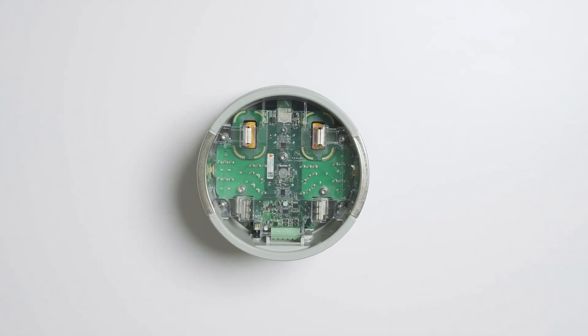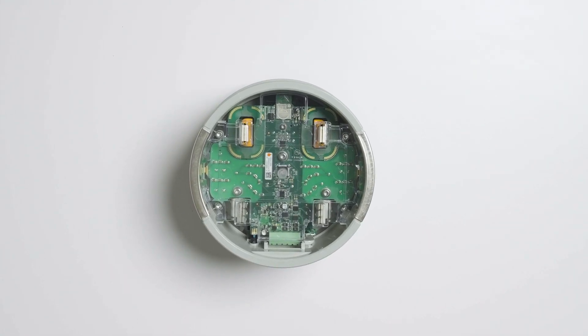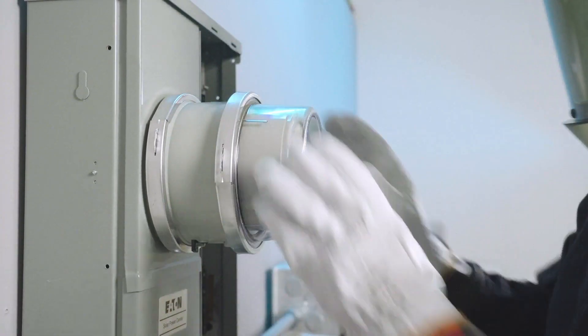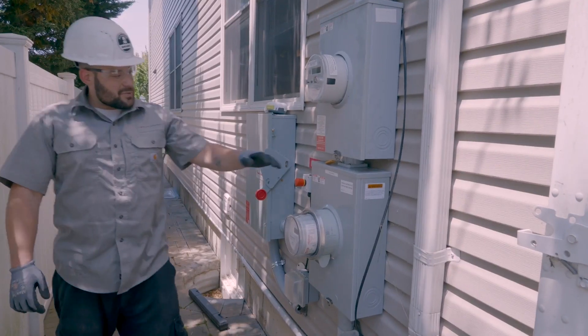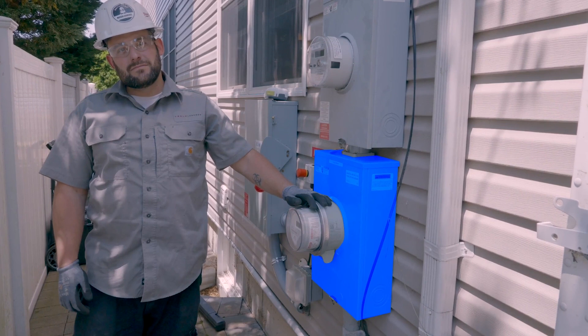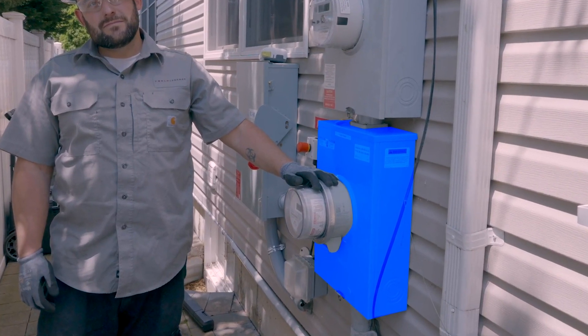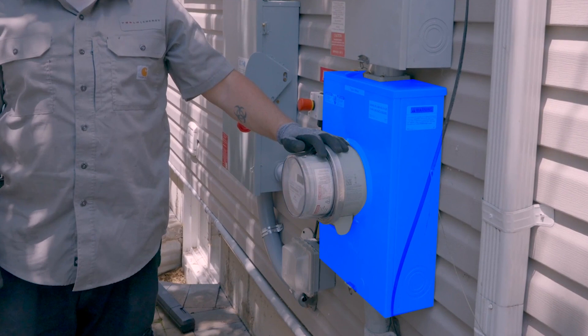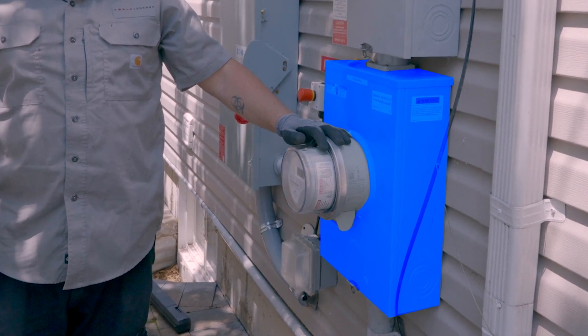Tesla Backup Switch is designed to be installed directly behind the customer's utility meter, disconnecting the home from the utility grid during a power outage. If the utility provider does not allow equipment behind the meter, or if the existing meter enclosure is incompatible, Backup Switch can be installed in a standalone meter panel that is downstream of the utility meter.